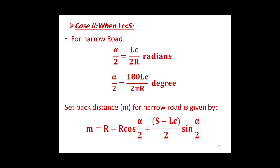When the length of the curve is less than the required side distance, for a narrow road: if the side distance S is greater than the length of the curve LC, the angle alpha subtended at the centre is determined with reference to the length of the circular curve LC. The setback distance is then calculated in two parts: α/2 = LC / (2πR) in radians, or α/2 = 180 × LC / (2πR) in degrees. The setback distance M for a narrow road is given by: M = R − R cos(α/2) + (S − LC)/2 × sin(α/2).